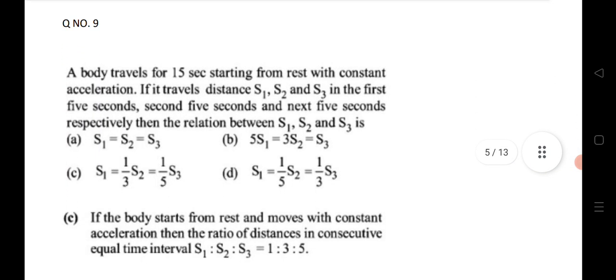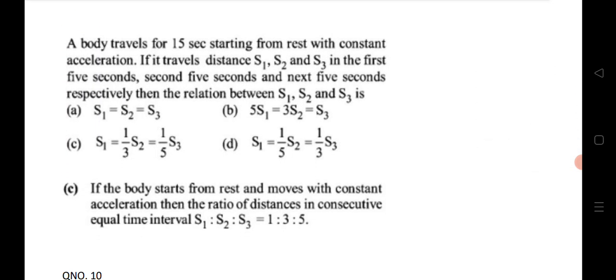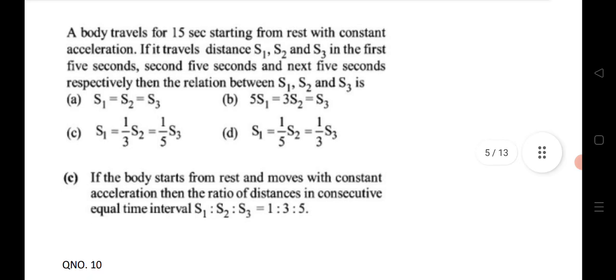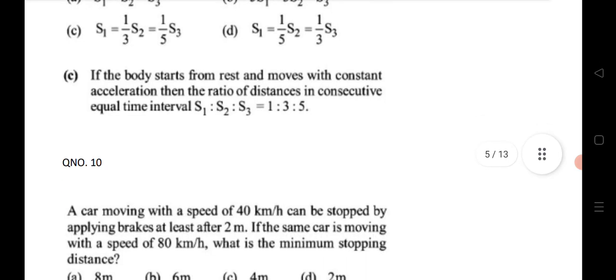Ninth question: a body travels for 15 seconds starting from rest with constant acceleration. Find the distances traveled in the first 5 seconds, next 5 seconds, and the final 5 seconds respectively. If a body starts from rest and moves with constant acceleration, the ratio of distances for consecutive equal time intervals is 1 : 3 : 5 — odd numbers.